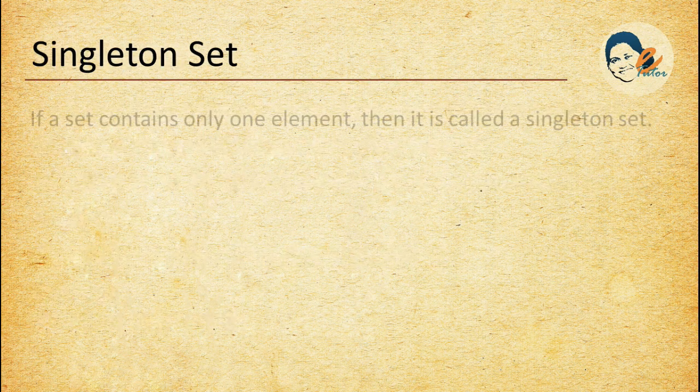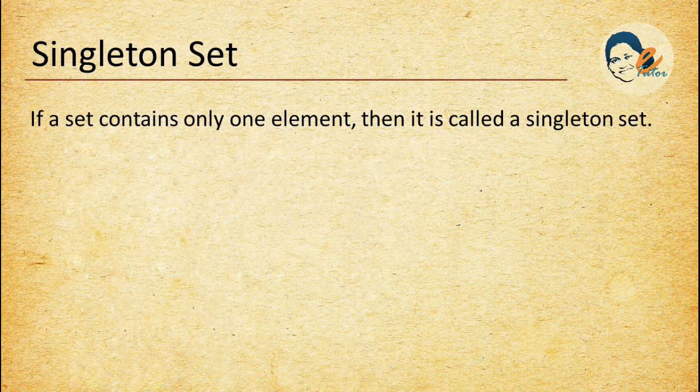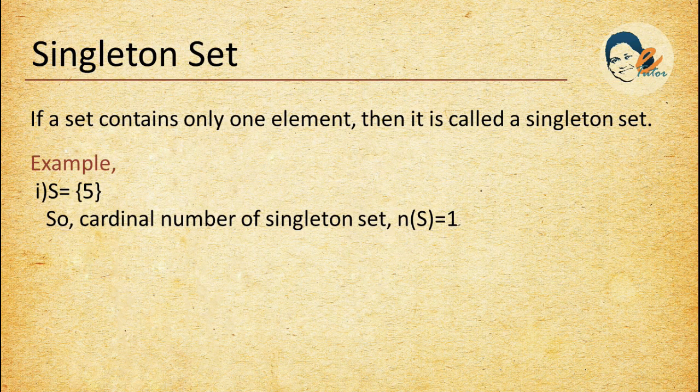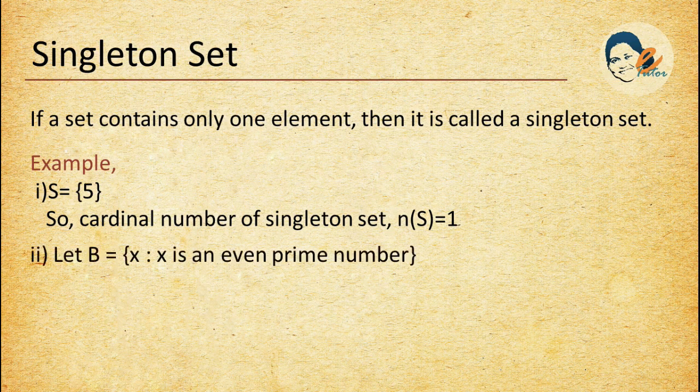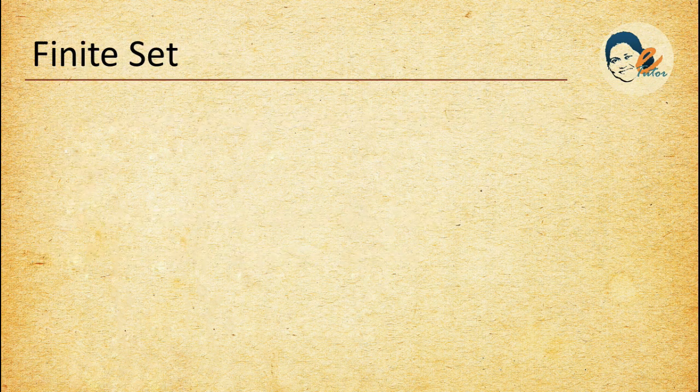Singleton set: if a set contains only one element then it is called a singleton set. Example: set S = {5}, so the cardinal number of a singleton set equals 1. Another example: set B = {x such that x is an even prime number}. There is only one even prime number, which is 2, that's why B is also a singleton set.